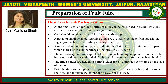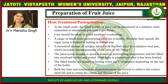Heat treatment or pasteurization: at the small scale, filled bottles of juice can be pasteurized in a stainless steel, enamel, or aluminium pan over a gas flame. Care should be taken to avoid localized overheating. To make fruit squash, the sugar syrup is heated to boiling in a large pan. A measured amount of syrup is mixed with the fruit juice in a stainless steel pan, increasing the temperature to 60-70 degrees Celsius. The juice or syrup mixture is quickly heated to pasteurizing temperature and hot filled into sterilized bottles and sealed. Fruit juice is pasteurized after bottling — filled bottles are heated in boiling water for 5-10 minutes depending on the size of the bottle. Both the time and temperature of pasteurization are critical to achieve the correct shelf life and to retain the color and flavor of the juice.